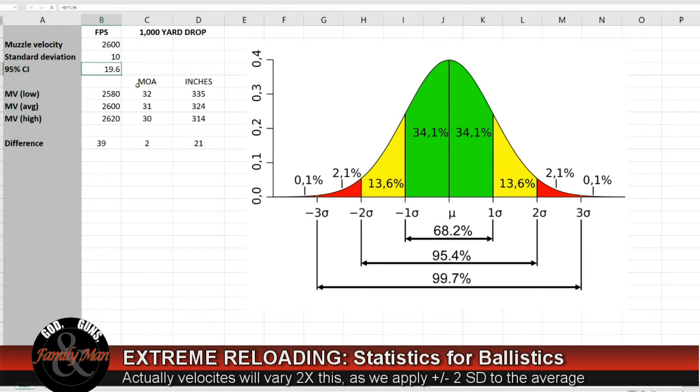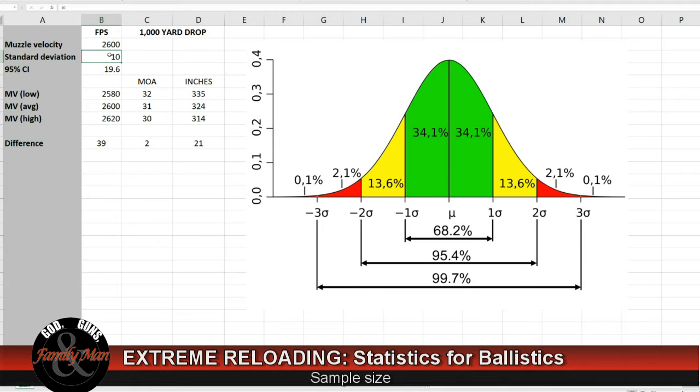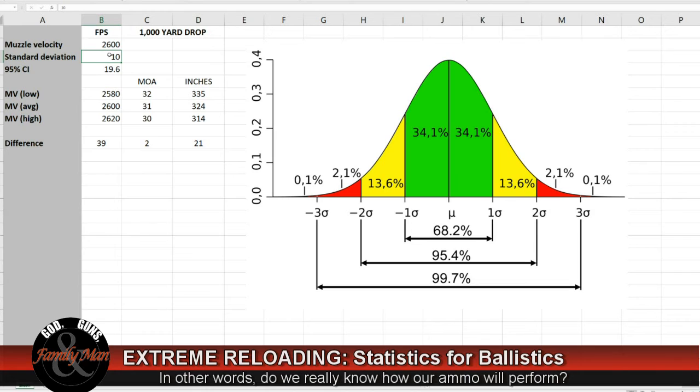Before we go down and look at this region of the table here, let me talk just a little bit more about standard deviation and sample size. Our 95% confidence assumes that we have a sufficient sample to base that reliability on, to base that confidence interval on. If we're simply firing 3 rounds over the chronograph, we'll get a mean, we'll get a standard deviation. But how representative of that entire population is that going to be? Not so well, not so good.